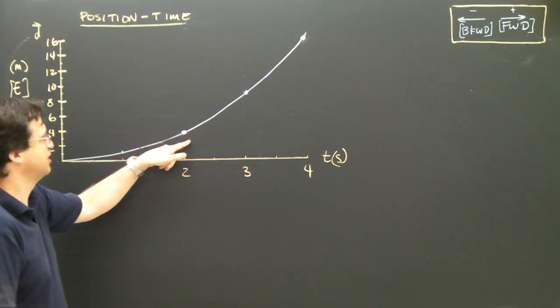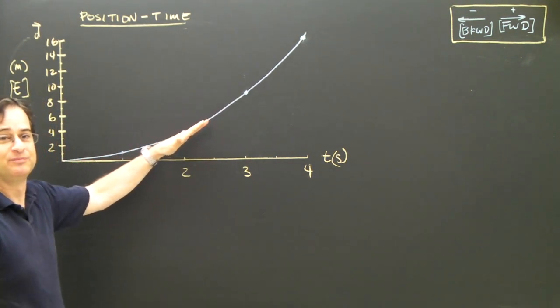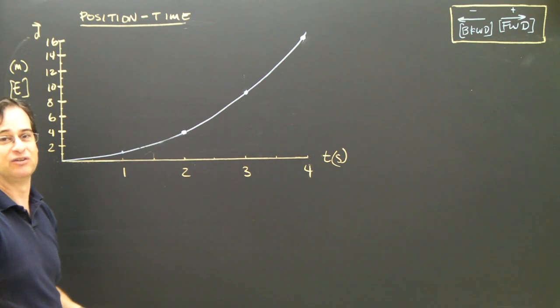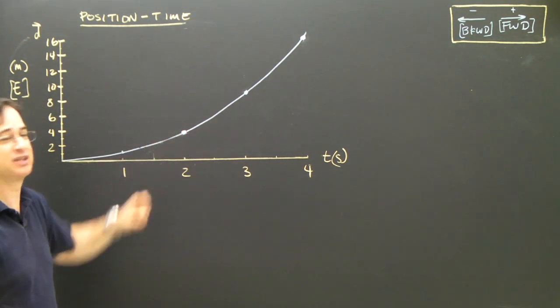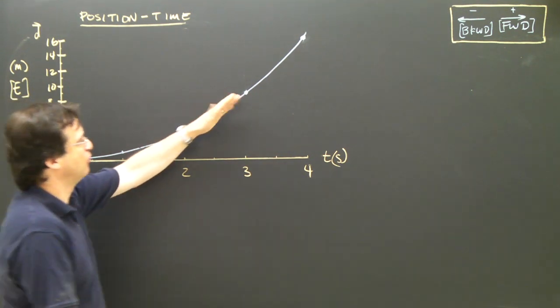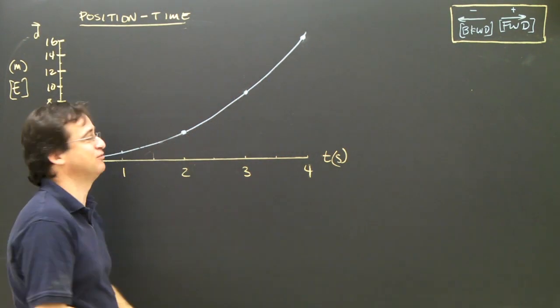But as I go to two seconds, if I look at just that little straight line portion right there, it's a little bit steeper. So the object is going a bit faster. That's called acceleration, an object moving slowly and getting faster. I look over at three seconds, and the slope is even steeper. So I must be going even faster.